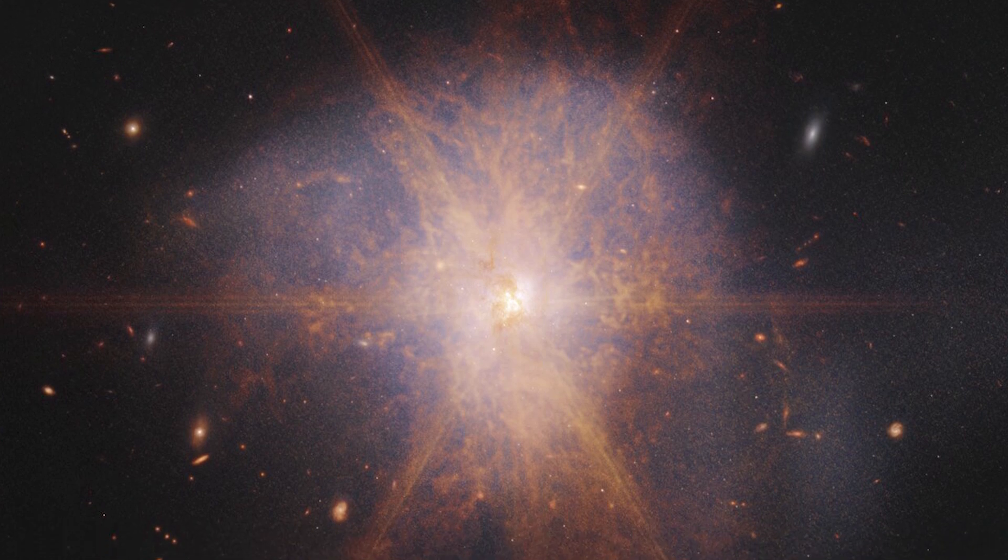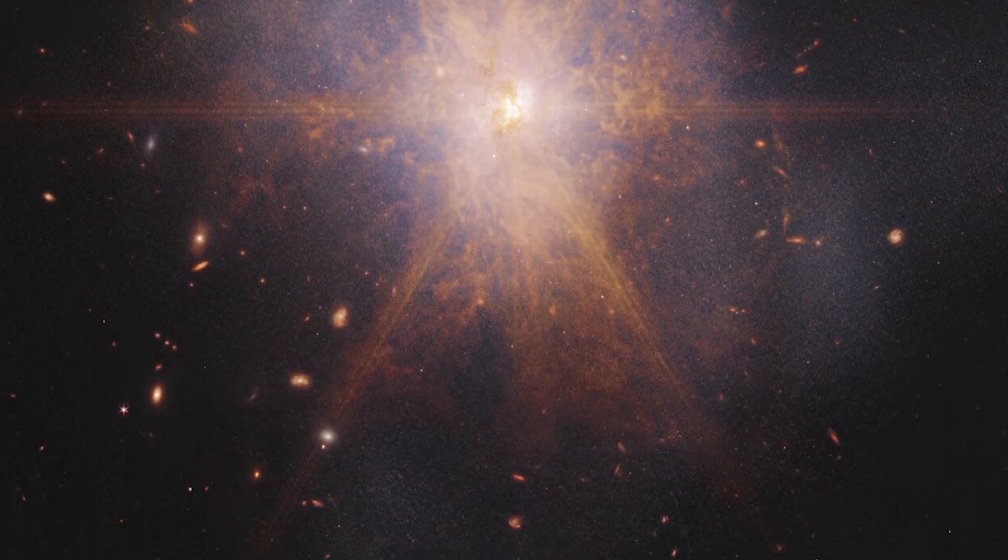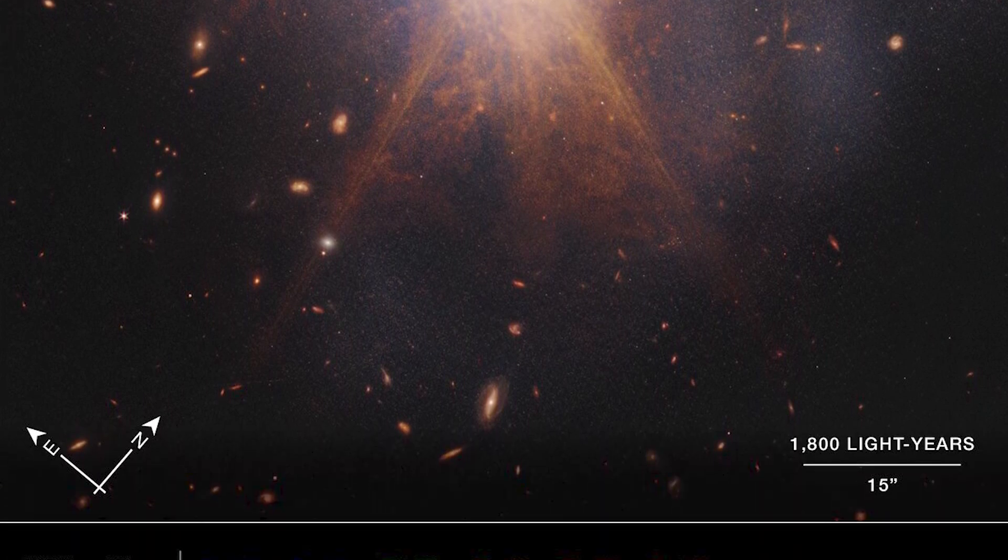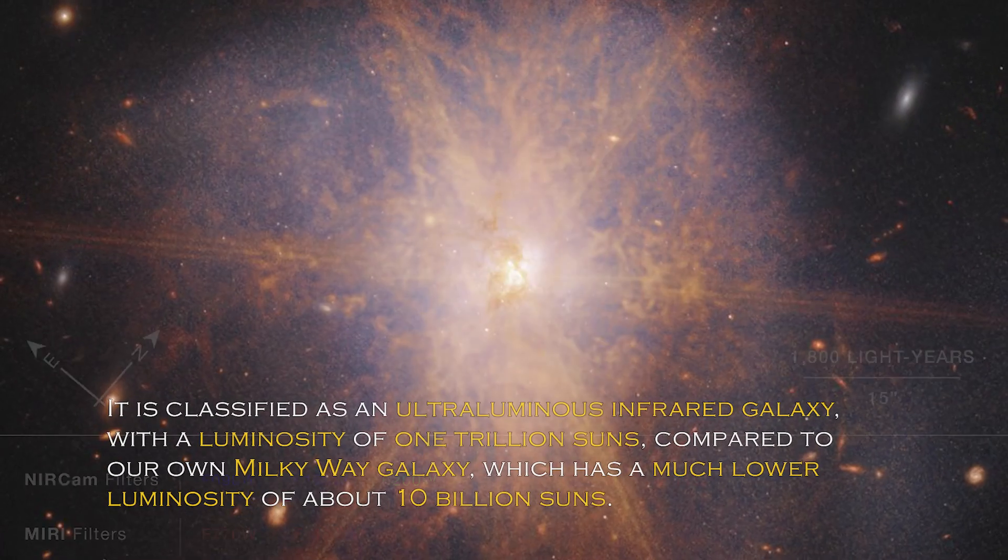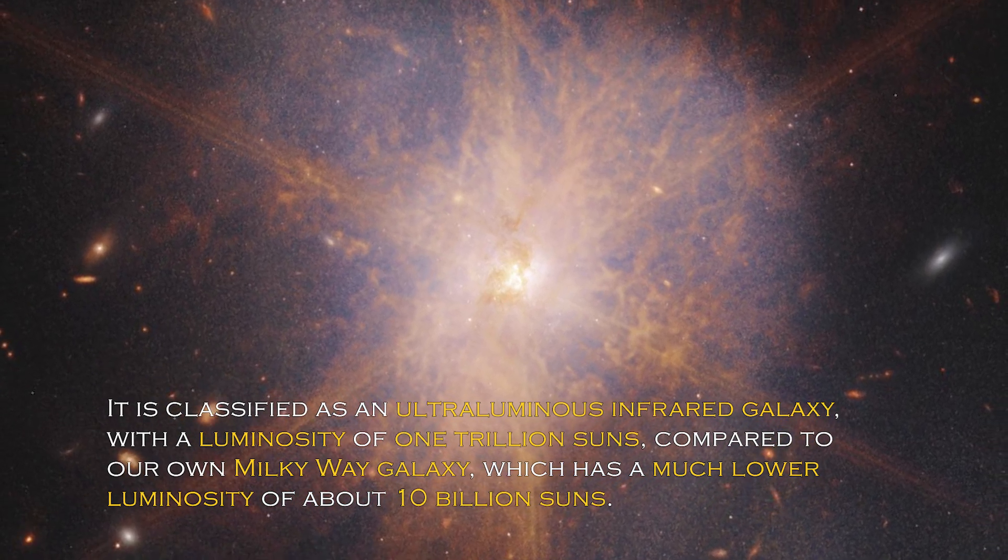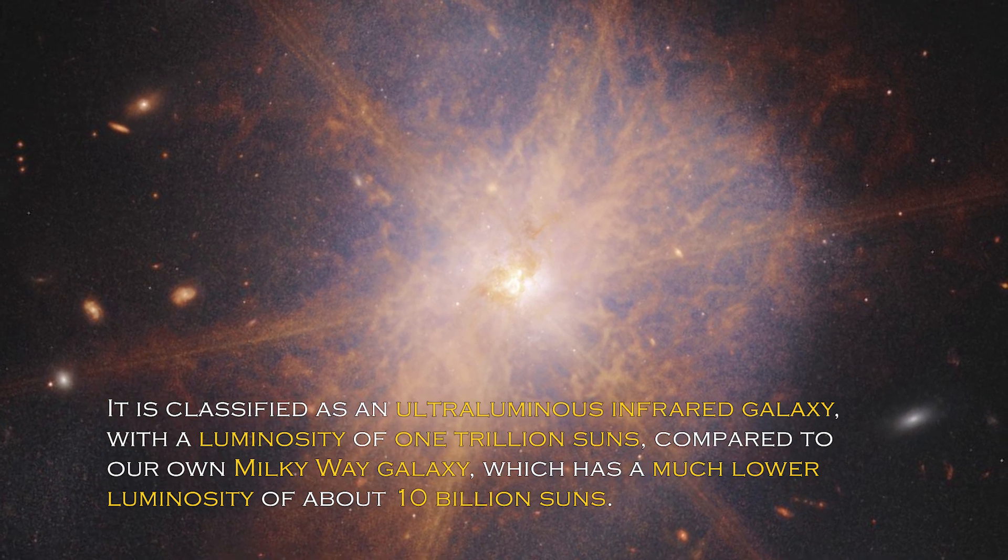When two spiral galaxies merge, the phenomenon known as ARP 220 shines brightest in the infrared, making it perfect for observation by the James Webb Space Telescope. It is classified as an ultra-luminous infrared galaxy, with a luminosity of one trillion suns compared to our own galaxy, the Milky Way, which has much lower luminosity of about 10 billion suns.